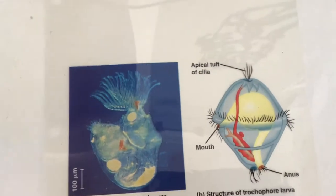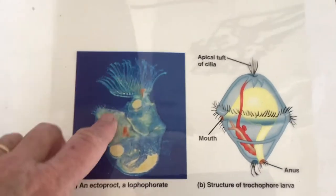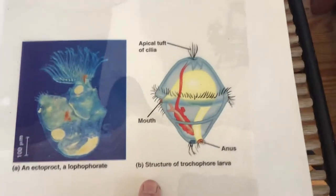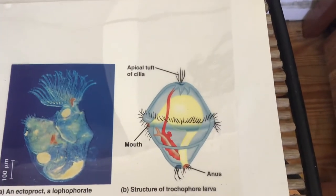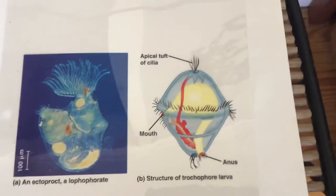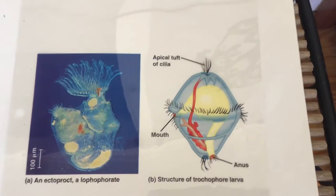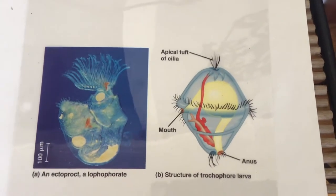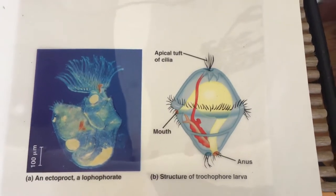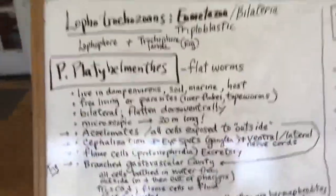Not all of the groups have this particular look, but all of them have something similar. The trochophore larva is common in this group and it looks kind of like a little top that is swimming around. It has a separate mouth and anus, which many of the groups from now on will have — a new feature, since so far we've been looking at things that just have one opening.